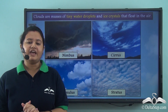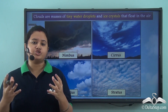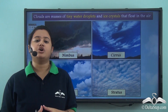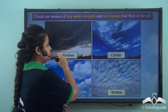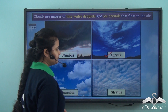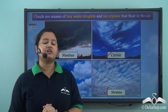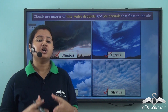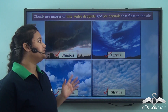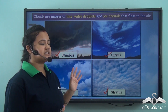In our previous lesson, we discussed different types of clouds based on shape and height. The different types of clouds based on shape are Nimbus, Cirrus, Cumulus, and Stratus. As we can see from the pictures, all these types of clouds look very different from one another, and on the basis of their appearance or shape we can classify clouds into these types.